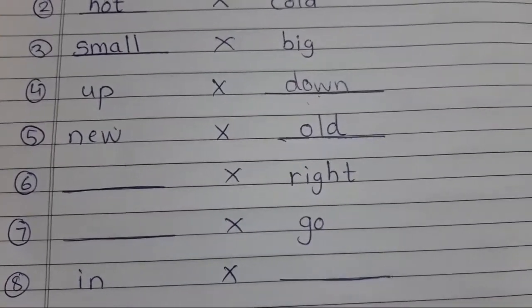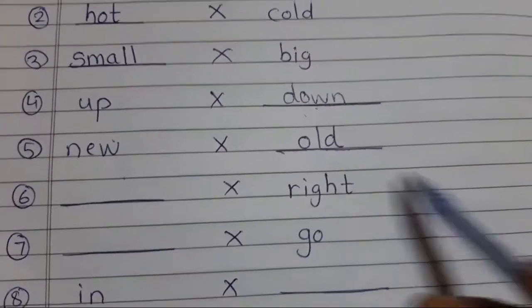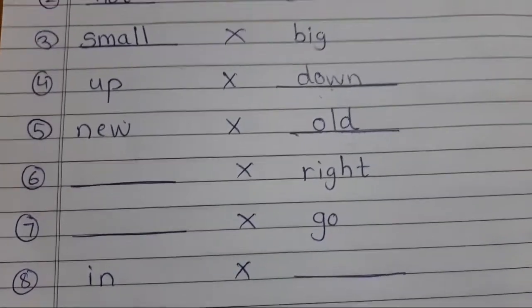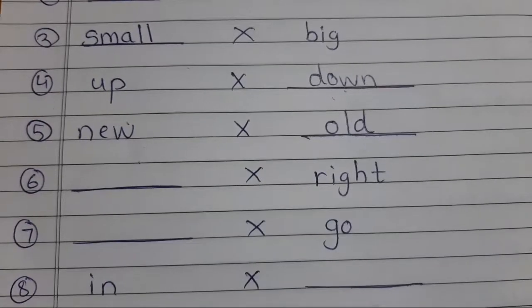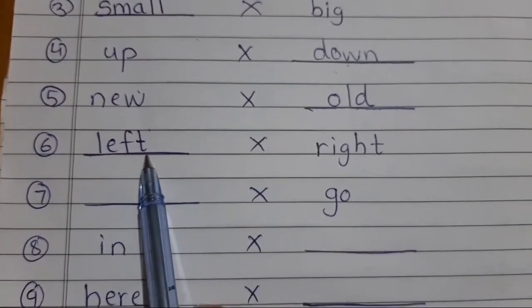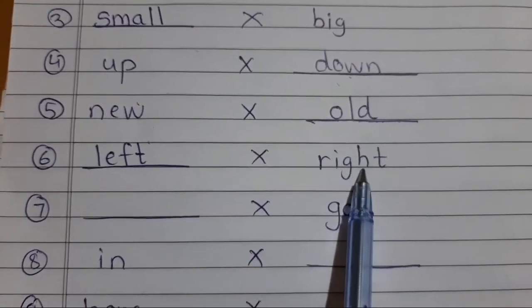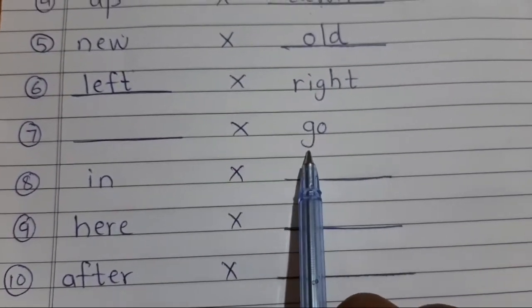So write them, write it down. Left, L-E-F-T. Left, see, L-E-F-T, left, left, left, opposite, right. Right, opposite, left. The next, dash opposite go. Go means jaun. Iske bare opposite kya hai? Stop.